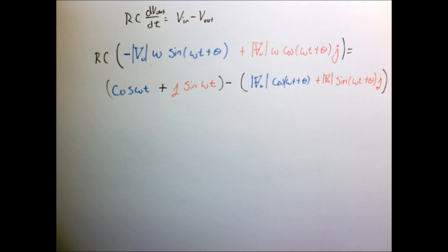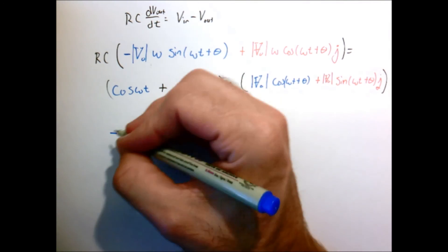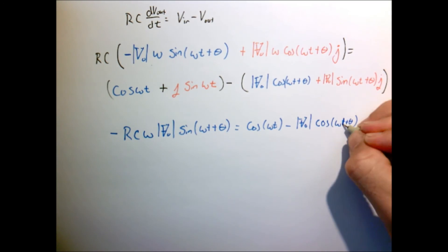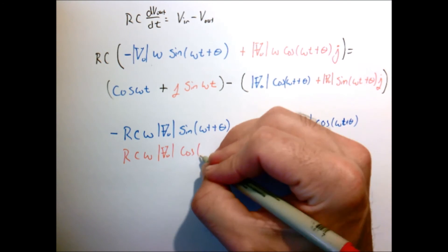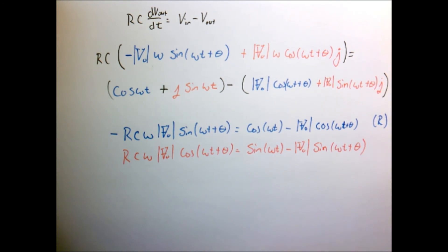So let's sort of group things together then by blue and red. So now we have both a blue equation and a red equation. So the real part is the blue. The imaginary part is what gave us the red.